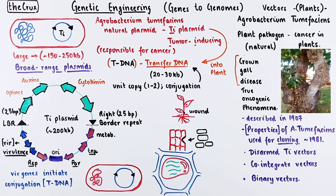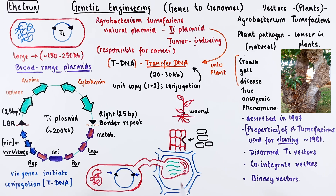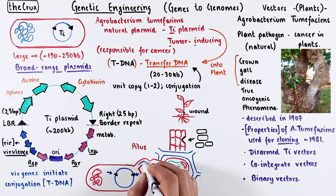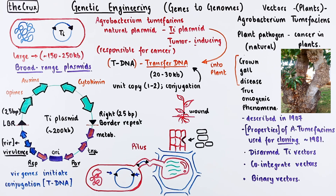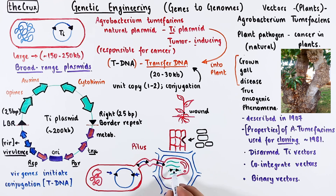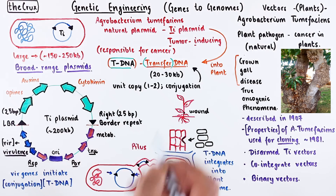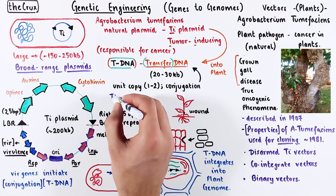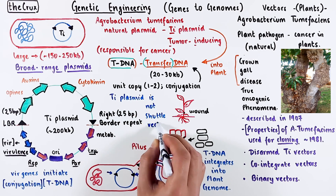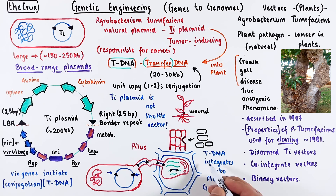One of the virulence proteins cuts the Ti plasmid at the repeat regions. In some strains, a copy is made before the transfer. Some of the virulence proteins are involved in making the pilus, which forms a channel for the processed transfer DNA to be transferred to the plant cell nucleus. Once inside the plant cell nucleus, the T-DNA integrates into the plant genome at a random spot. Since only the T-DNA is transferred and not the entire Ti plasmid, the Ti plasmid is not a shuttle vector. The T-DNA only propagates because of integration.